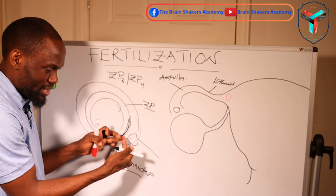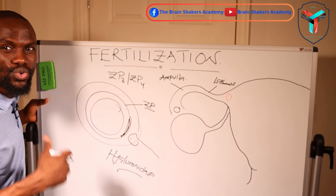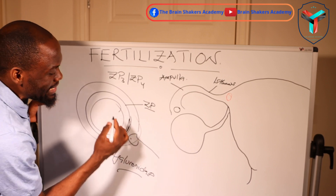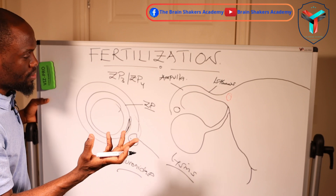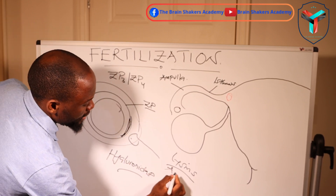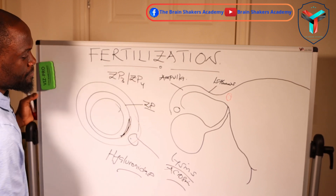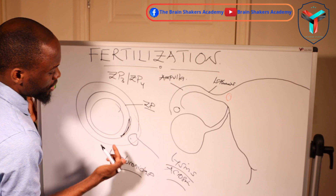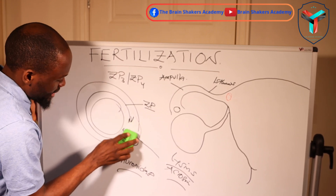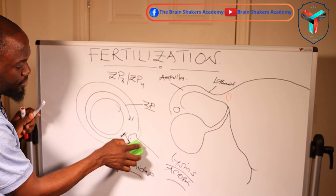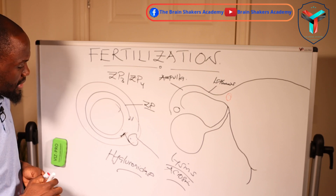Once attachment has occurred, the sperm releases lysins from its lysosomes and also produces another enzyme called acrosin, which is a protease enzyme. These two enzymes digest the zona pellucida, allowing the spermatozoa to gain access into the cytoplasm of the ovum.